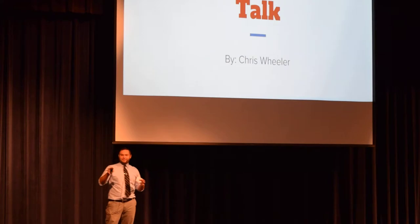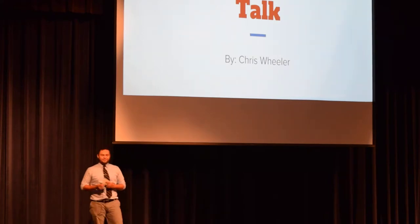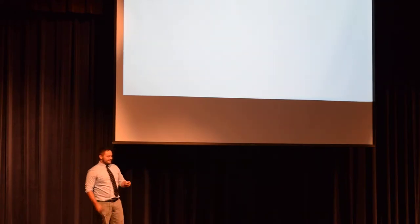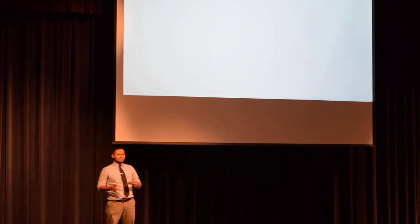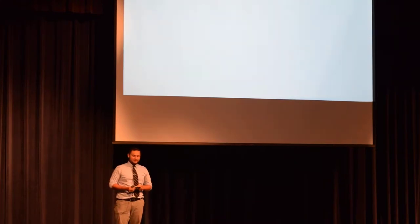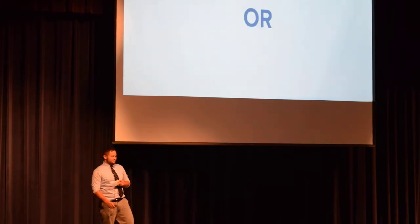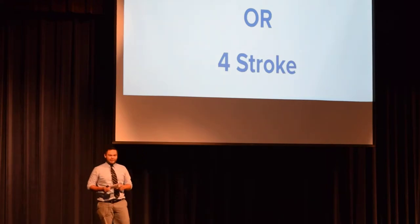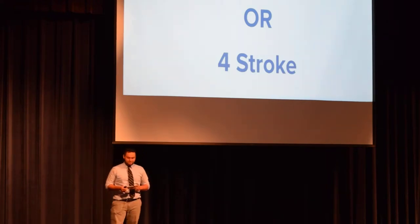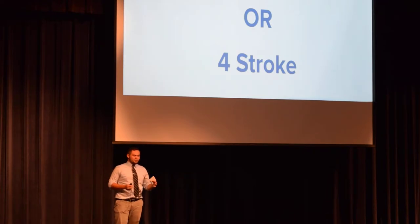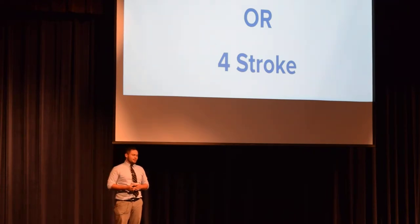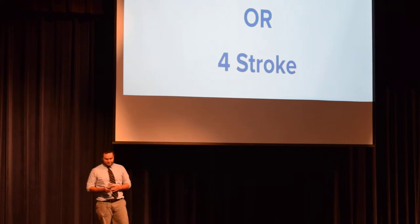Everyone here probably drove a car today to school. So there are two main types of gasoline-powered combustion engines: the two-stroke and the four-stroke engine. Their names pretty much explain how they operate. A two-stroke completes a combustion and exhaust stroke in two rotations of the piston, and a four-stroke will take four rotations of the piston.